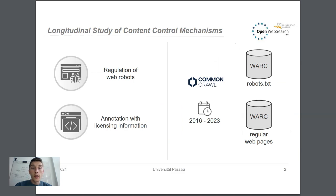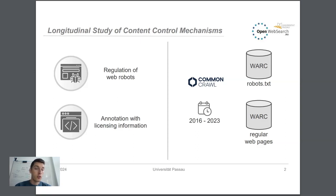Conceptually there are two ways of exercising web content control. This is first of all the regulation of web robots by the robots exclusion protocol, and secondly the annotation of documents with license information.